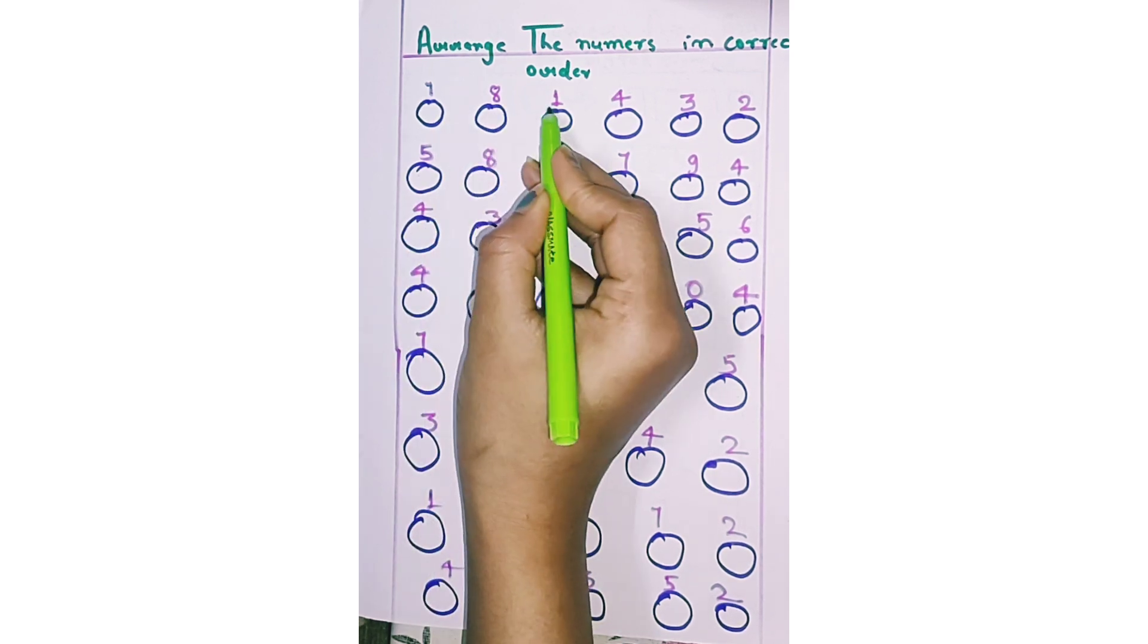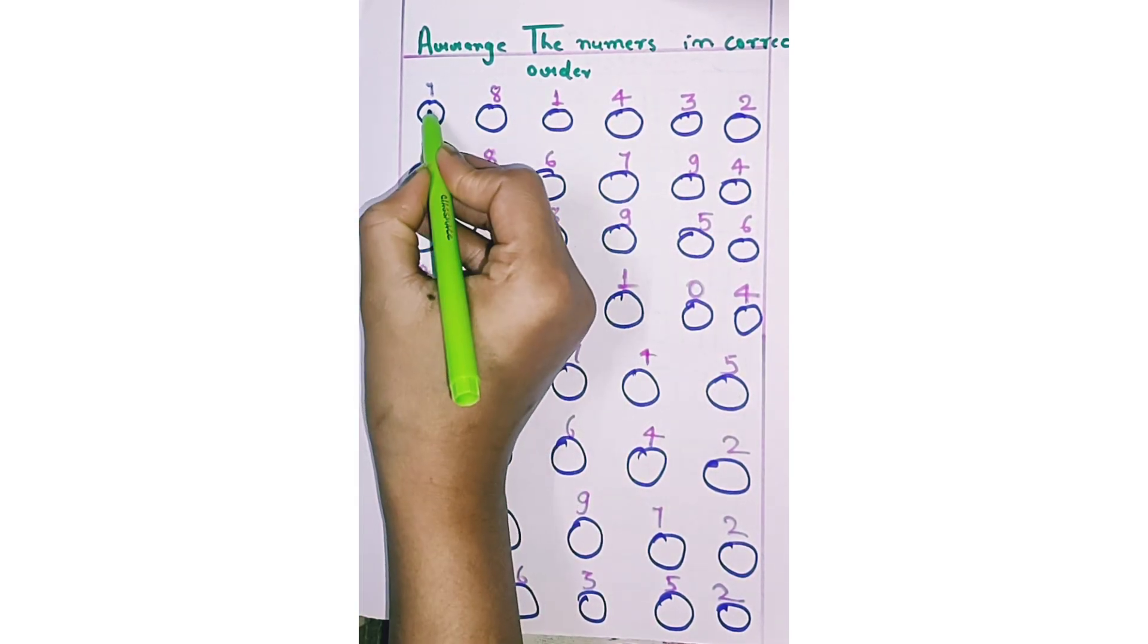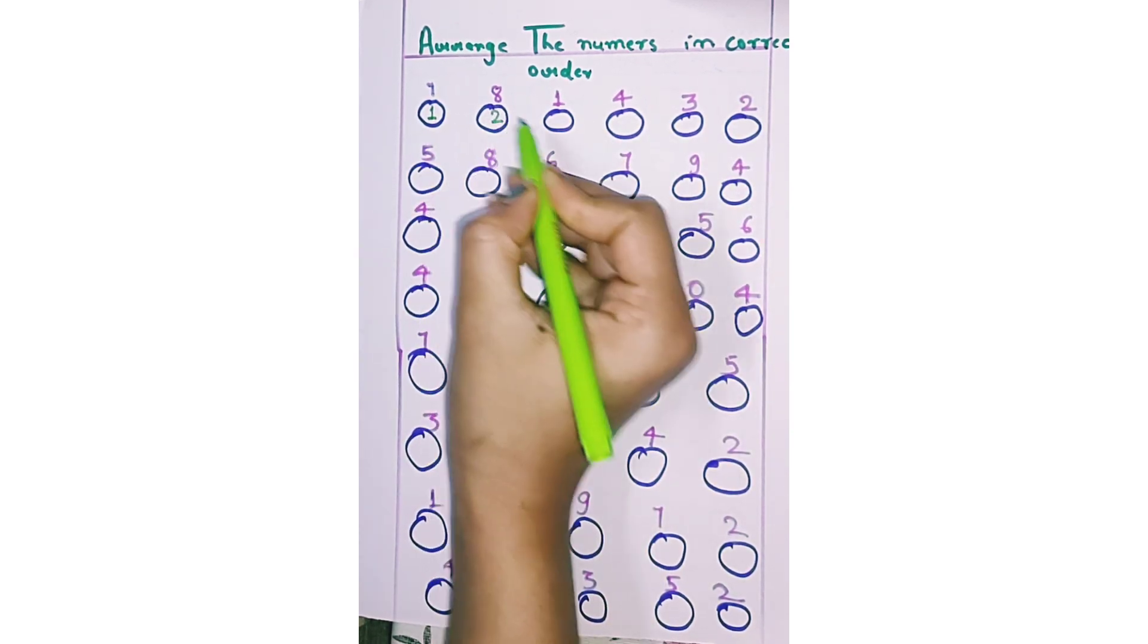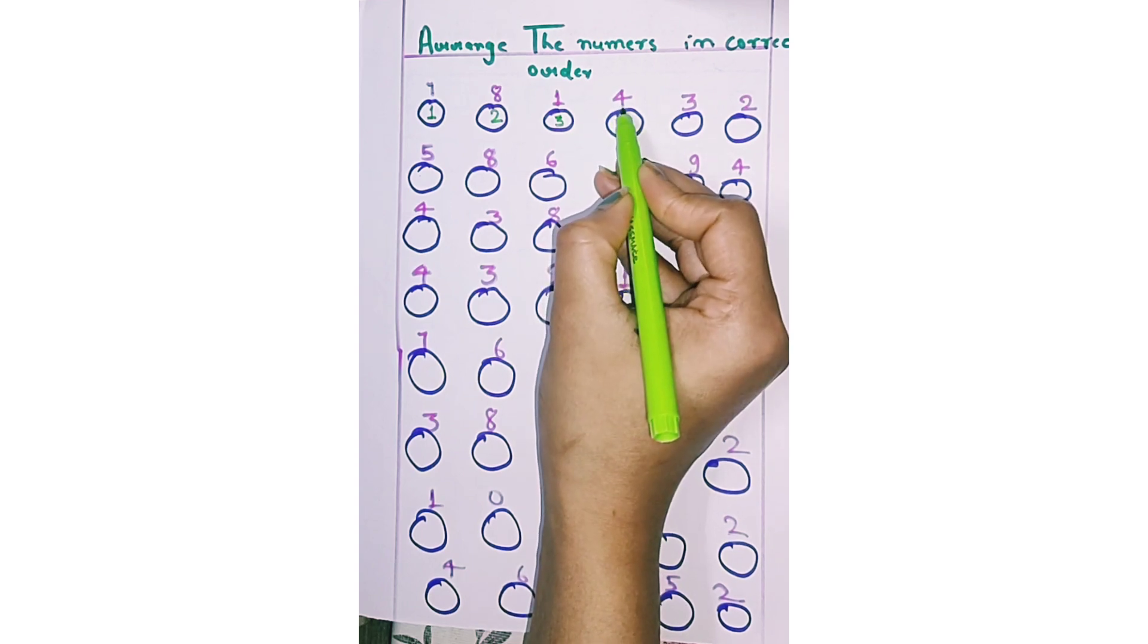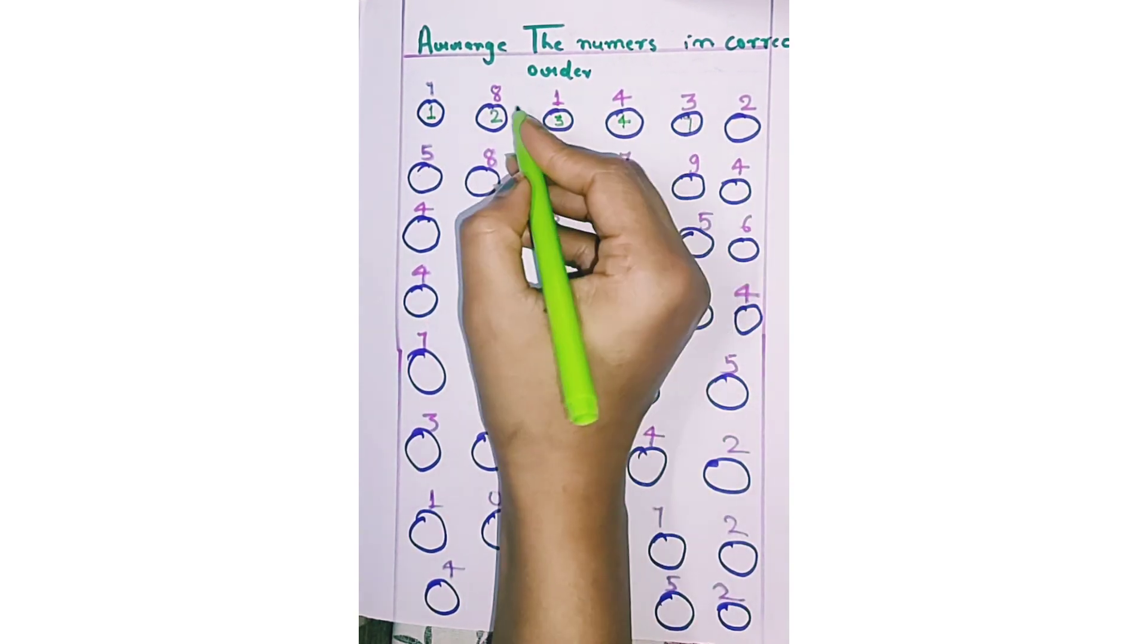7, 8, 1, 4, 3, 2. First 1, next 2, next 3, next 4, next 7, and 8.